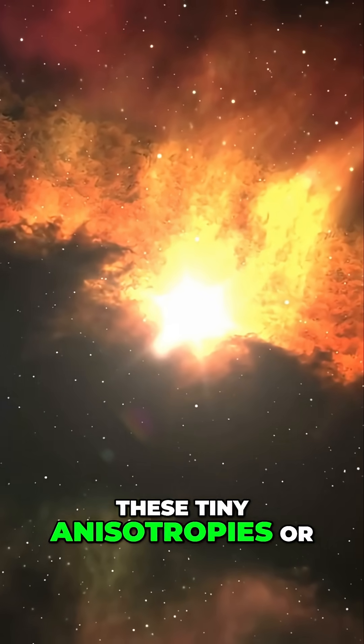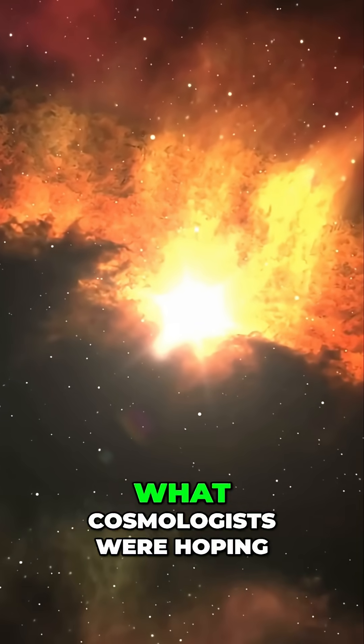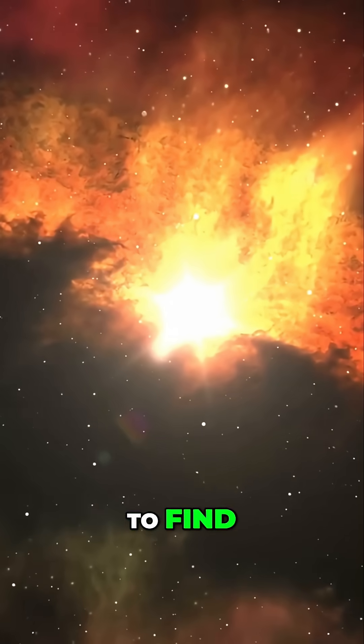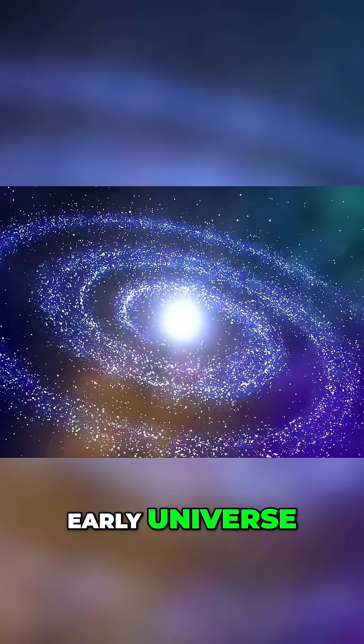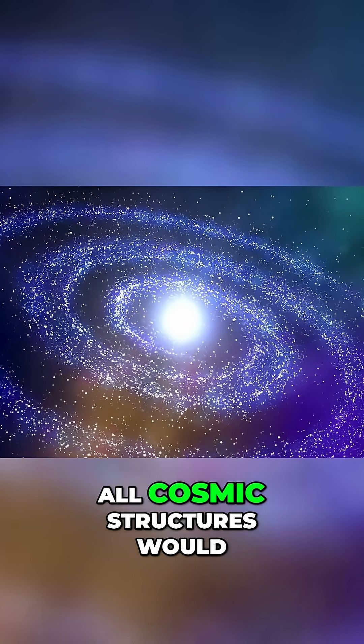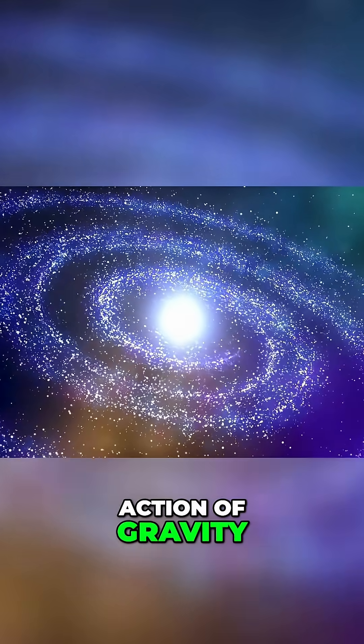These tiny anisotropies, or directional variations, were exactly what cosmologists were hoping to find. They represented the primordial density fluctuations in the early universe, the seeds from which all cosmic structures would eventually grow through the action of gravity.